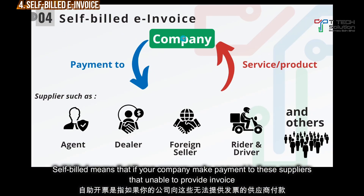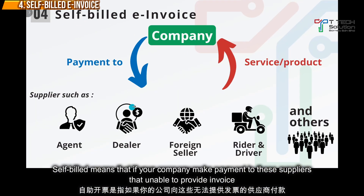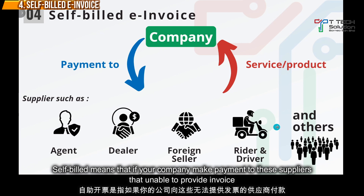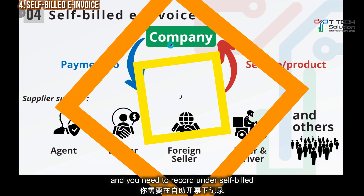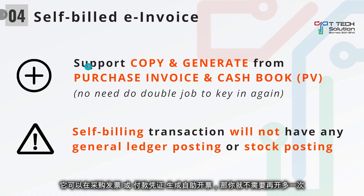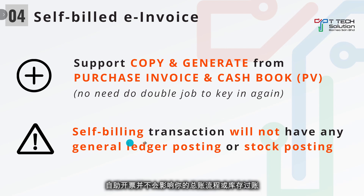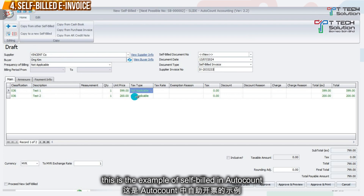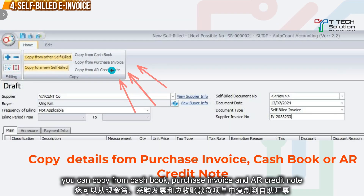For the fourth highlight — self-bill — this applies when your own company makes payments to suppliers such as agents, dealers, foreign sellers, riders, drivers, or individuals who cannot provide you with an invoice and you need to record it. All self-bills can be copied or generated from your purchase invoice or cash book such as a payment voucher. Self-bill transactions will not have any general ledger posting or stock posting. You key in your classification, description, supplier, and details, then click approve to submit. You can also copy from cash book, purchase invoice, or AR credit note.